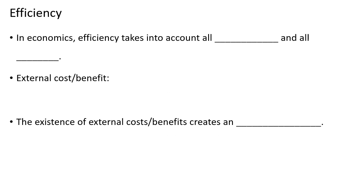Before we get into externalities, we need to define what efficiency is. In economics, efficiency takes into account all the costs and all the benefits. So far, we've assumed that this has been the case, and therefore people are acting optimally.